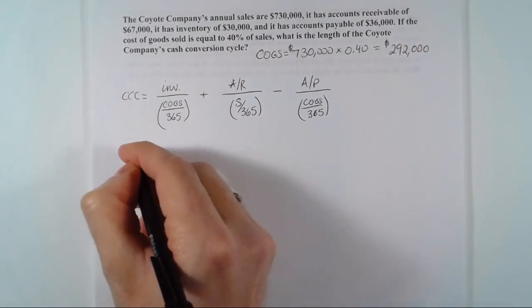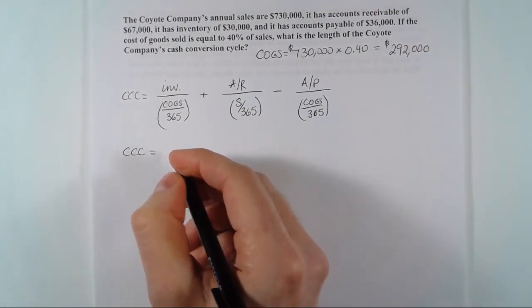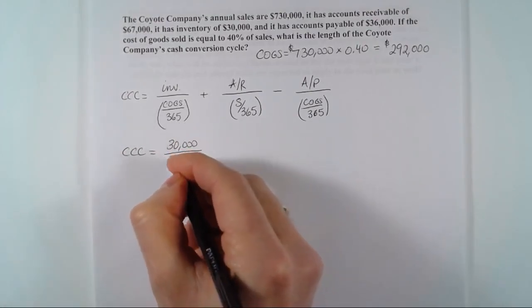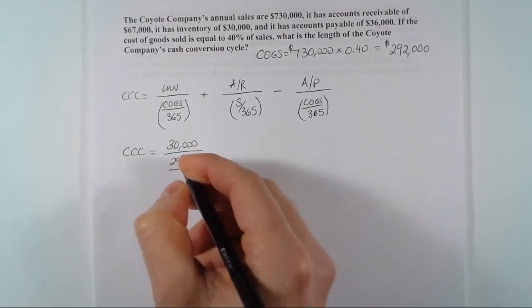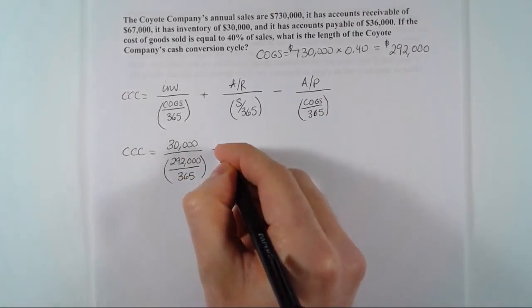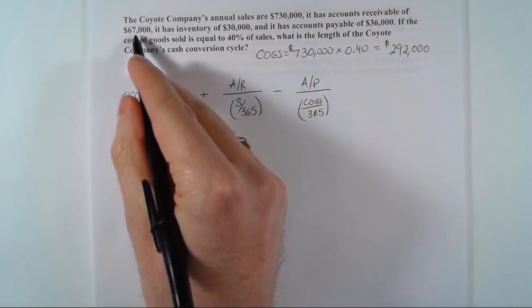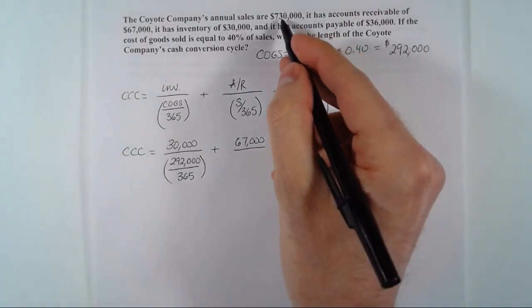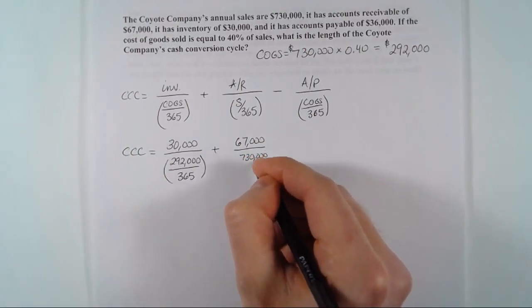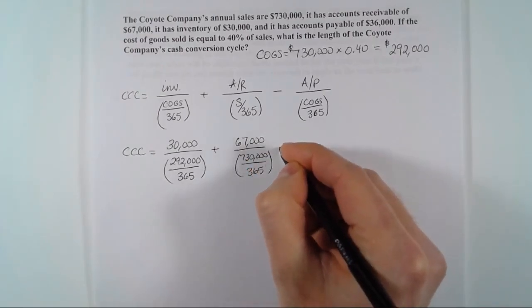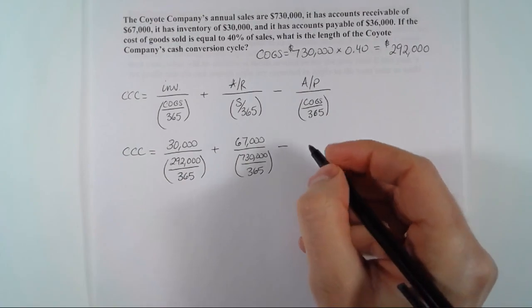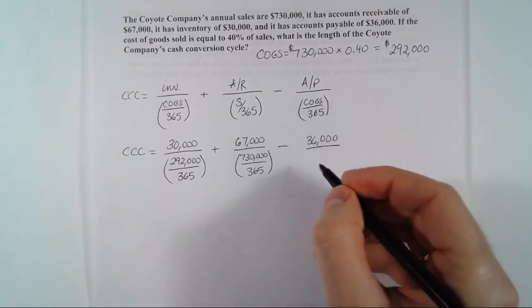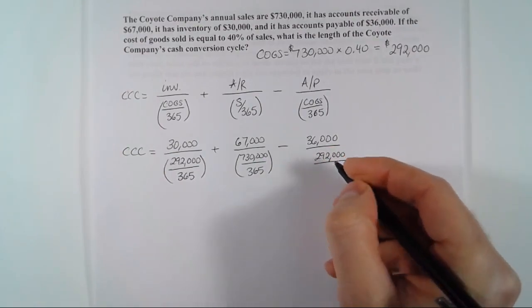Now let's plug in the values. The cash conversion cycle equals: inventory of $30,000 divided by ($292,000 / 365), plus accounts receivable of $67,000 divided by ($730,000 / 365), minus accounts payable of $36,000 divided by ($292,000 / 365).